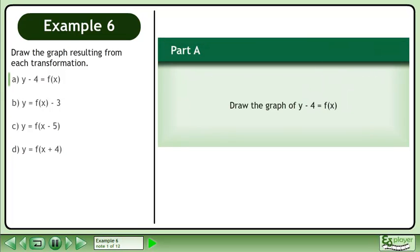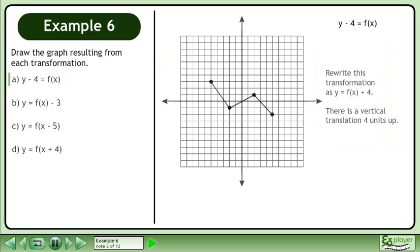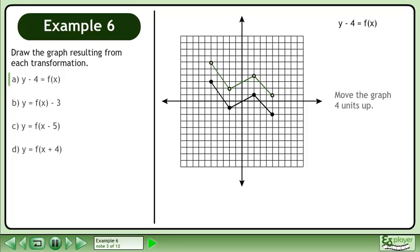Draw the graph resulting from each transformation. In part A, we'll draw the graph of y minus 4 equals f. We write this transformation as y equals f plus 4. There is a vertical translation 4 units up. Move the graph 4 units up.